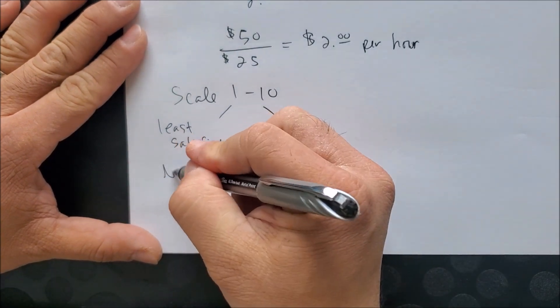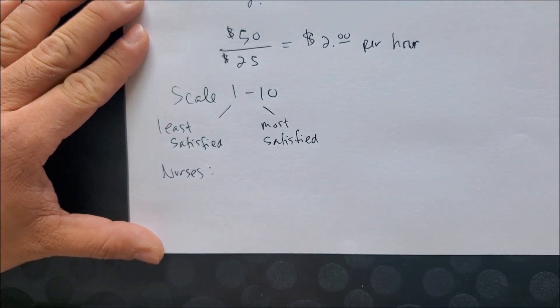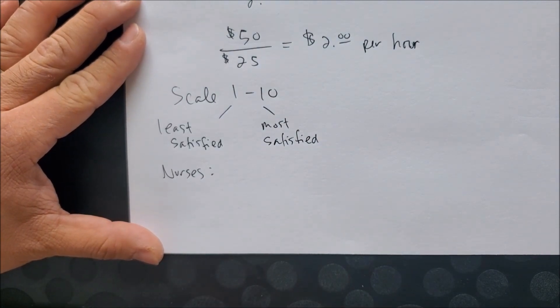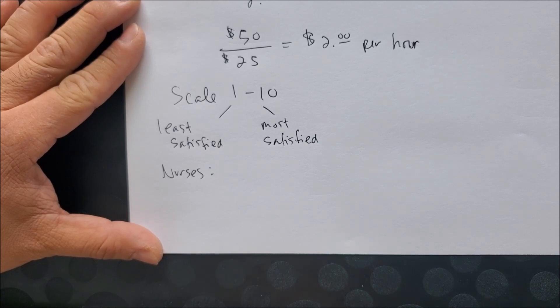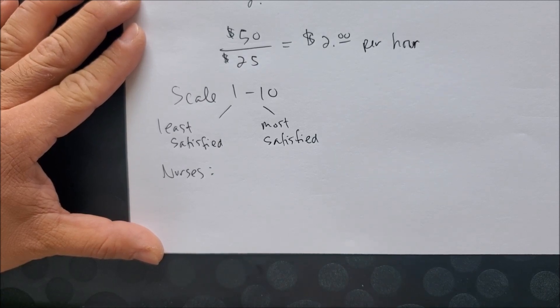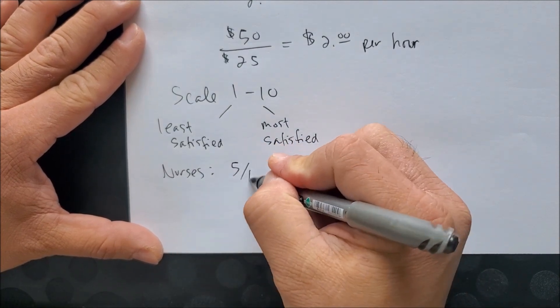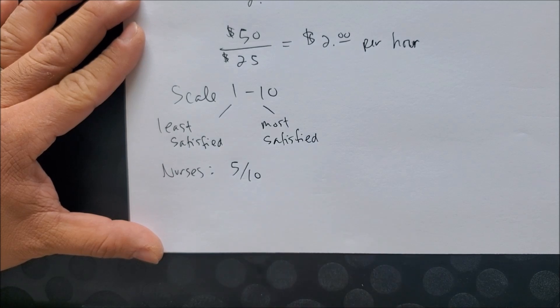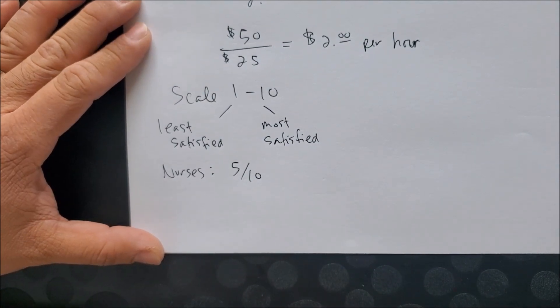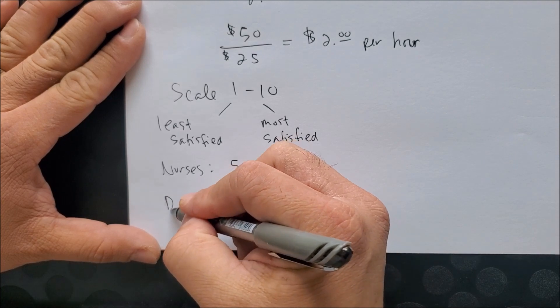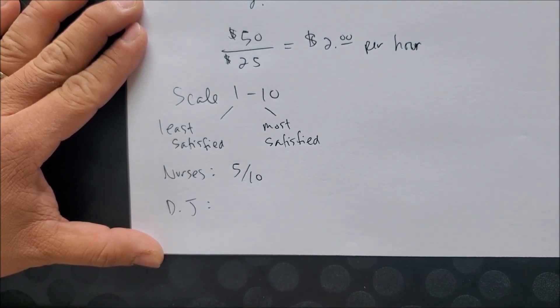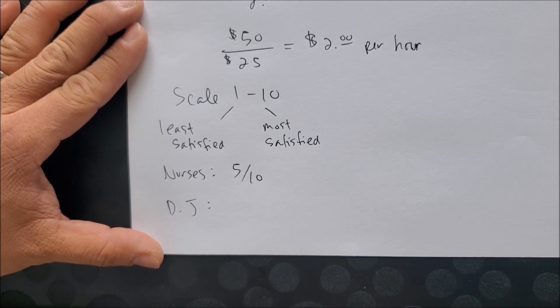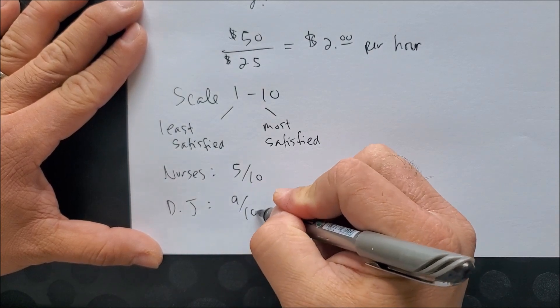One represents least satisfied in that occupation, and 10 represents most satisfied. For nurses, as a nurse you may not really like the sight of hospital beds, sick patients, or even blood. So let's say your satisfaction on a scale of 1 to 10 is 5 out of 10. It's not the least, not the most, but in between. Whereas a DJ, because you enjoy the nightlife, the music, meeting people, you have a greater sense of satisfaction—let's say 9 out of 10.